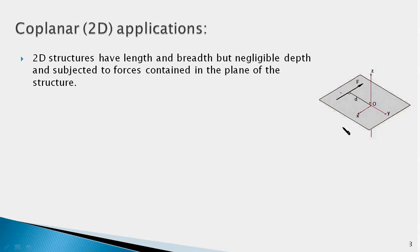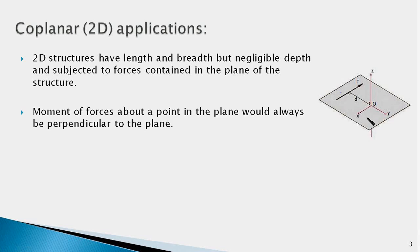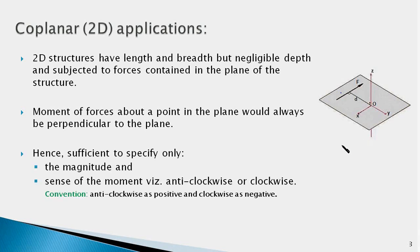The moment of a force is about a point. 2D structures or planar bodies have length and breadth but negligible depth, and are subjected to forces contained in the plane of the structure. In this figure we see a flat plate in the XY plane, and the forces acting on it are also in the same plane. Therefore the moment of the forces about a point O would always be along an axis normal to the plane — the moment vectors would be along the Z axis, pointing in either positive or negative Z direction. In 2D cases it is sufficient to specify only the magnitude of the moment and its sense, either anti-clockwise or clockwise.